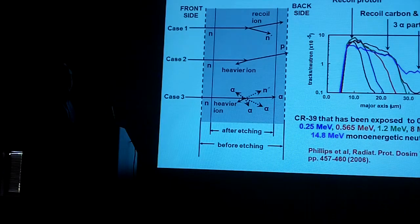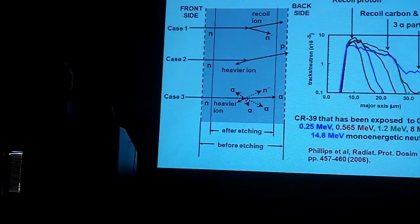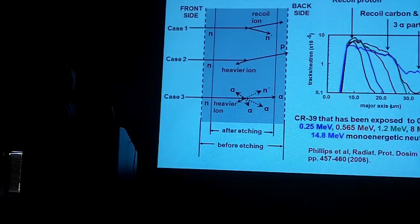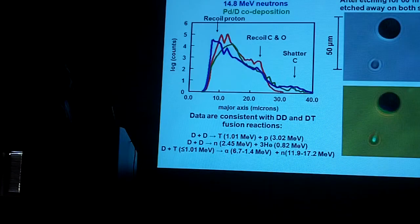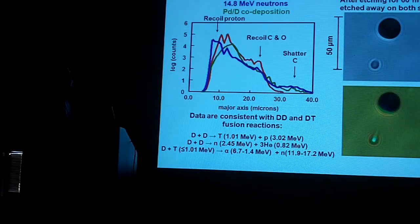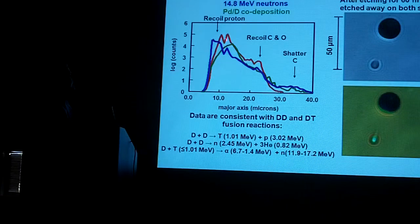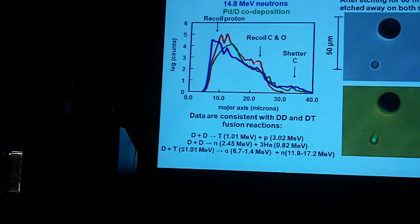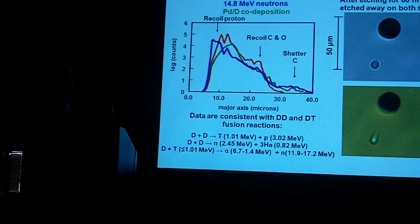This was out of the physics journals on how you analyze CR-39. Here's what we had, and we've recopied the 2.45 MeV neutron and a 14.8 MeV neutron in the red and blue, and the green is what we saw.